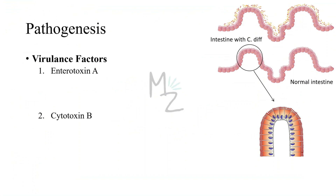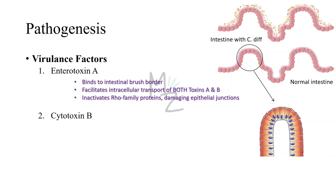Enterotoxin A binds to the intestinal brush border on the enterocytes and facilitates intracellular transport of both toxins A and B. It inactivates the Rho family proteins, thereby damaging the epithelial junctions. When epithelial junctions are damaged, fluid leaks, causing diarrhea. Both exotoxins A and B are glucosyltransferases — enzymes that add glucose to a GTPase called Rho GTPase.